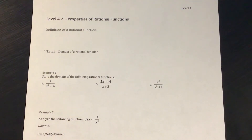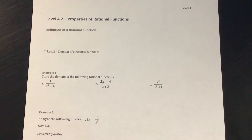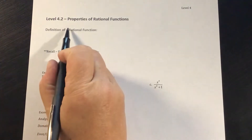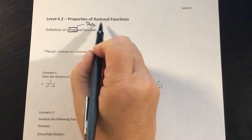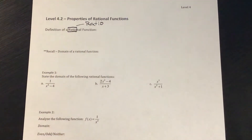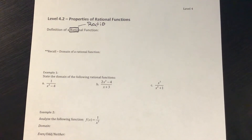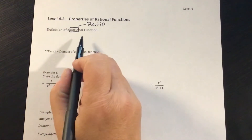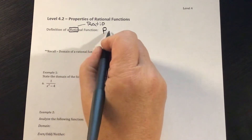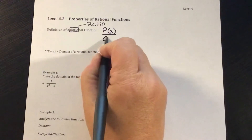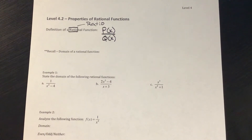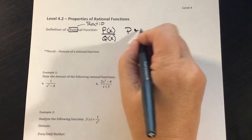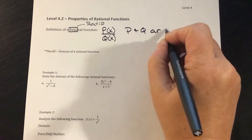Finishing up these last three sections in Unit 4, we're looking at rational functions. If we think about the word rational, the first part of that word is a ratio. So we're looking at functions that are fractions, basically. The definition of a rational function is P of X over Q of X, where P and Q are both polynomials.